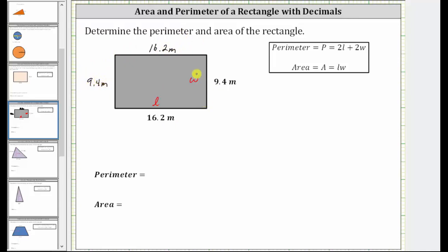So now if we think about walking around the rectangle, the perimeter is 16.2 meters plus 9.4 meters plus 16.2 meters plus 9.4 meters. So the perimeter P is equal to 16.2 plus 9.4 plus 16.2 plus 9.4. To determine the sum though, it'll be easier to write the sum vertically, lining up the corresponding place values. We have 16.2 plus 9.4 plus 16.2 plus 9.4.